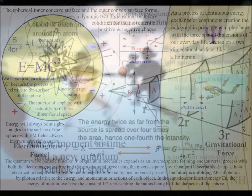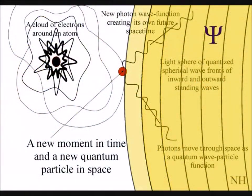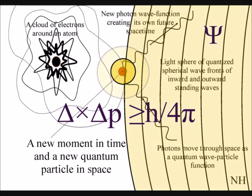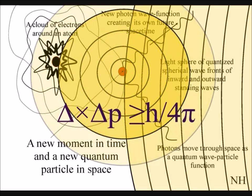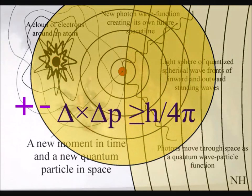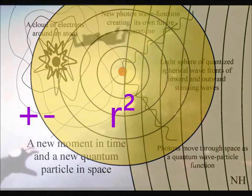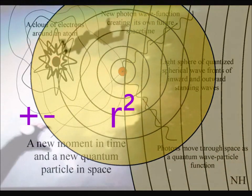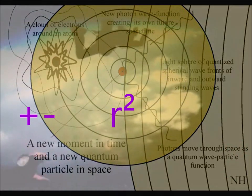These videos explain this as a process of spherical symmetry forming and breaking, that is relative to the spherical surface. The outer surface forms positive charge, and the inner concave surface forms negative charge. Therefore, we have to square the radius, because the process is relative to the spherical surface.